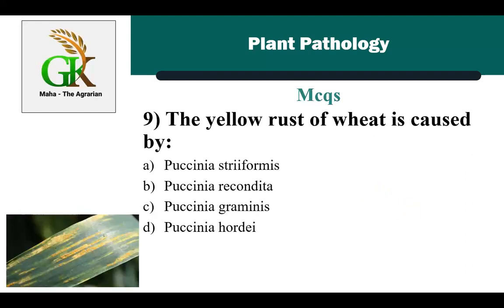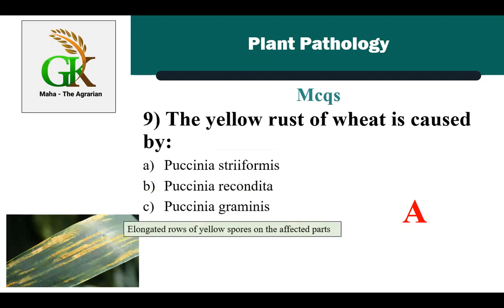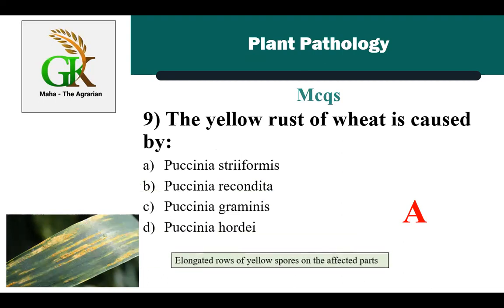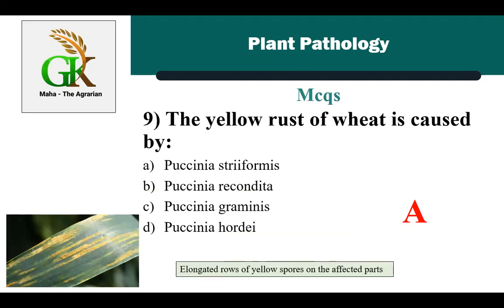The next MCQ is: yellow rust of wheat is caused by — the correct answer is A: Puccinia striiformis. Yellow rust is also known as stripe rust. In yellow rust you can see elongated rows of yellow spores on the affected parts.